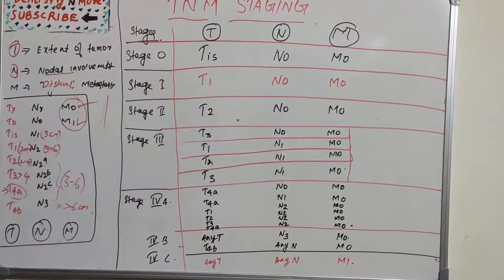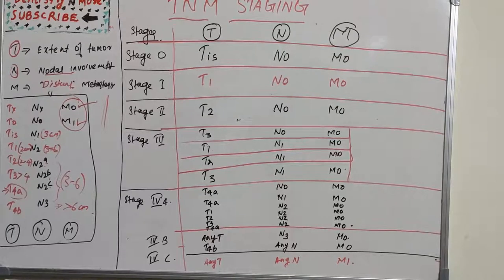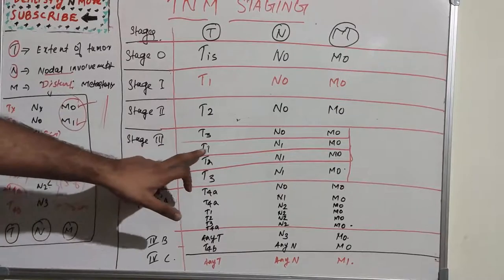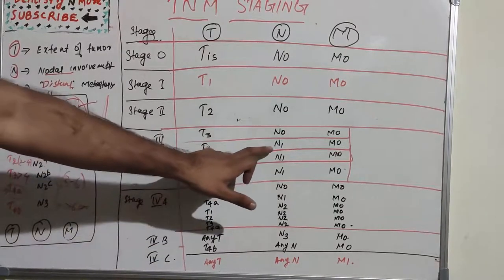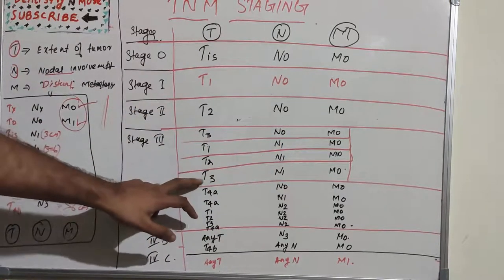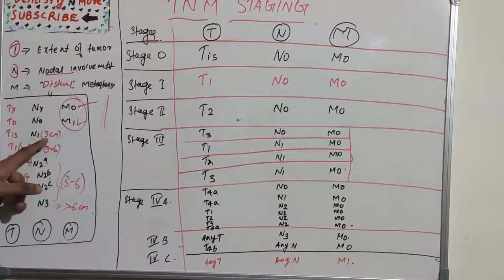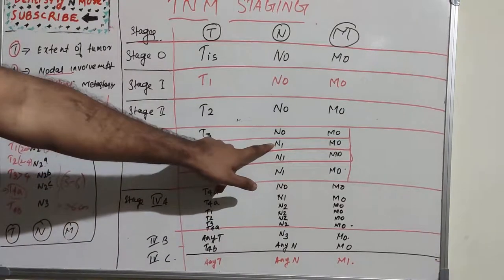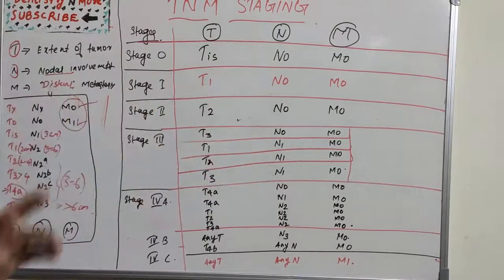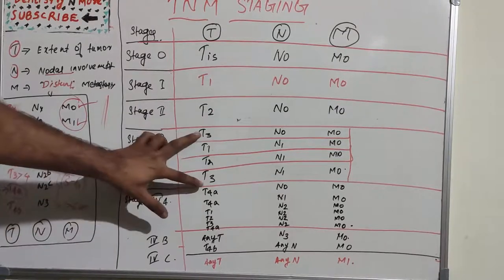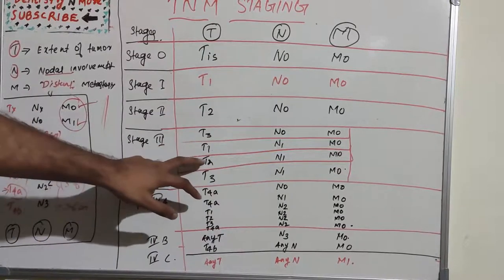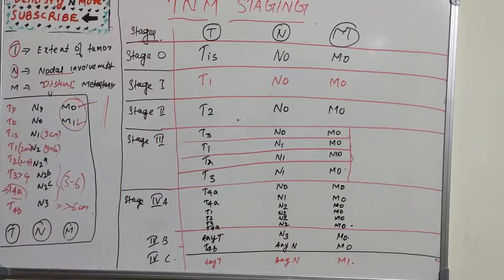Stage 3 has four types—four ways to become stage 3 cancer. It could be T1, T2, or T3 with presence of N1, and M0 is not present. T1, T2, T3 with presence of N1, which is 3 centimeter regional lymph node extension. But if it's T3 and N0, it also becomes stage 3.